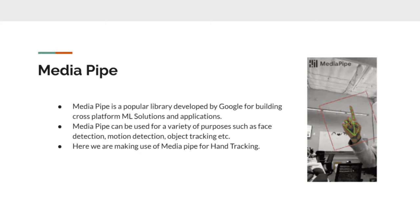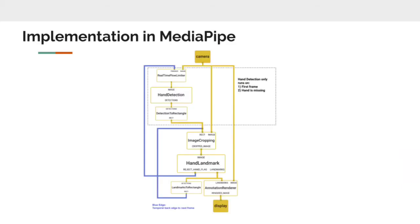Here comes the most interesting part: MediaPipe. As discussed, we are going with the neural network way, and MediaPipe is one such solution. MediaPipe is a popular library developed by Google. Its major advantage is that it is cross-platform and can be used for building several ML solutions and applications — including object tracking, motion detection, face detection, and in our case, hand tracking.